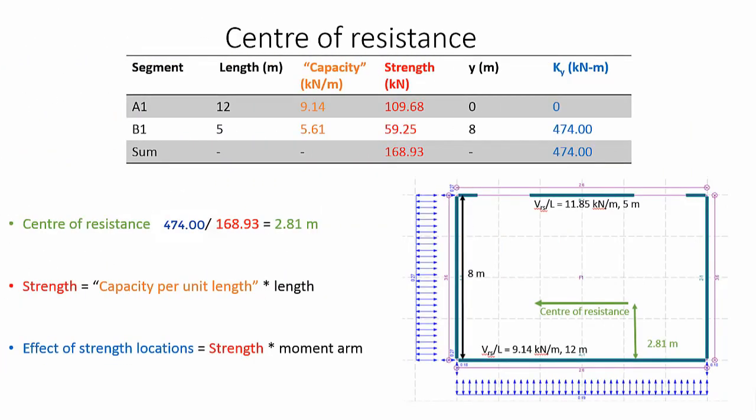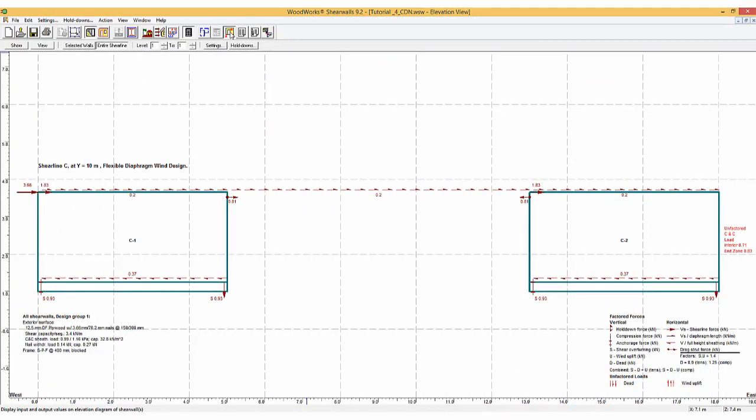To calculate the eccentricity, the center of loading and the center of resistance must be calculated. The calculation of the center of rigidity of the diaphragm is based on the relative rigidities of the shear walls. The shear walls offer four options to the user to make this estimation, which are found in the design settings.